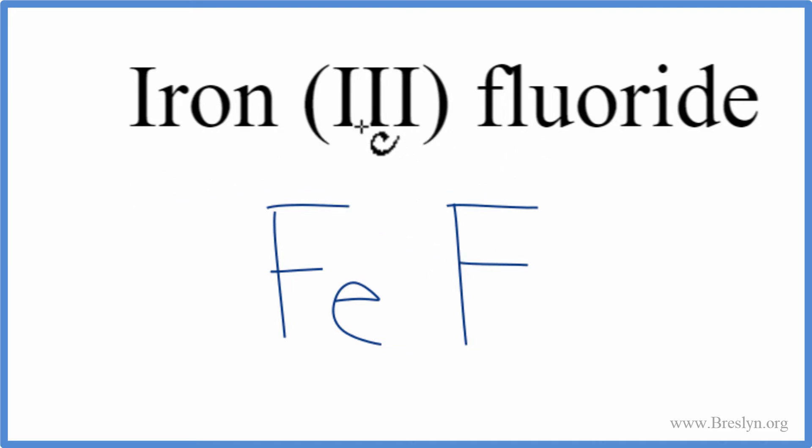Right here in the name, we see this Roman numeral 3. It's iron-3. This 3 tells you that the iron has a 3-plus ionic charge. Fluorine, we go to the periodic table, that has a 1-minus charge.